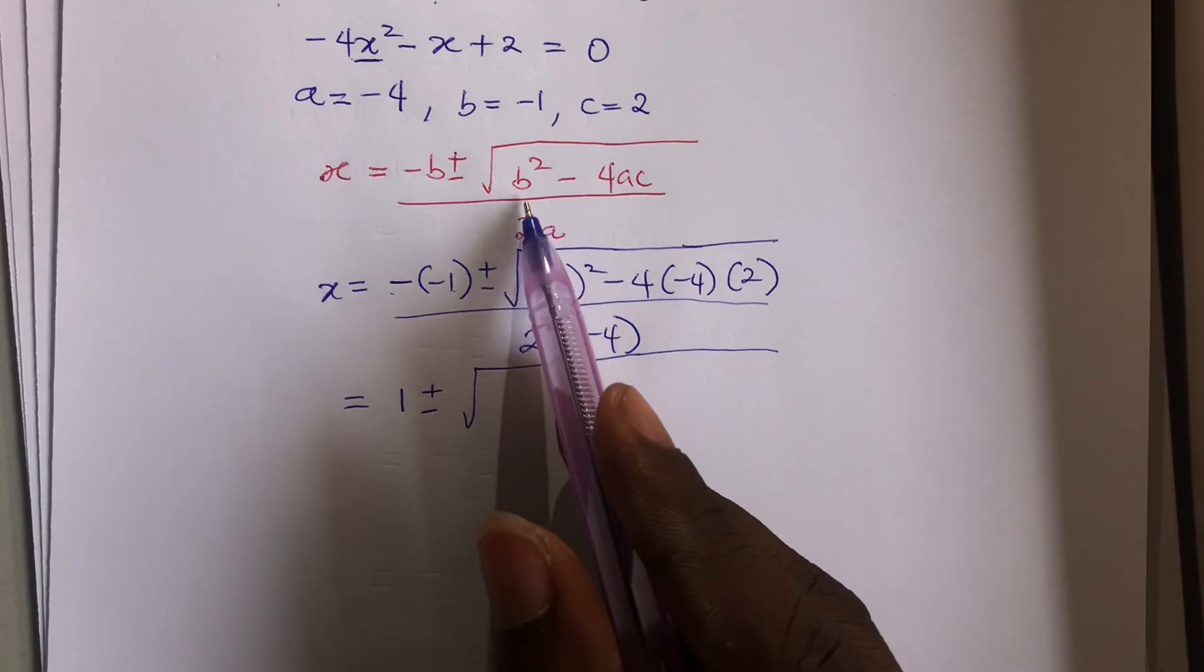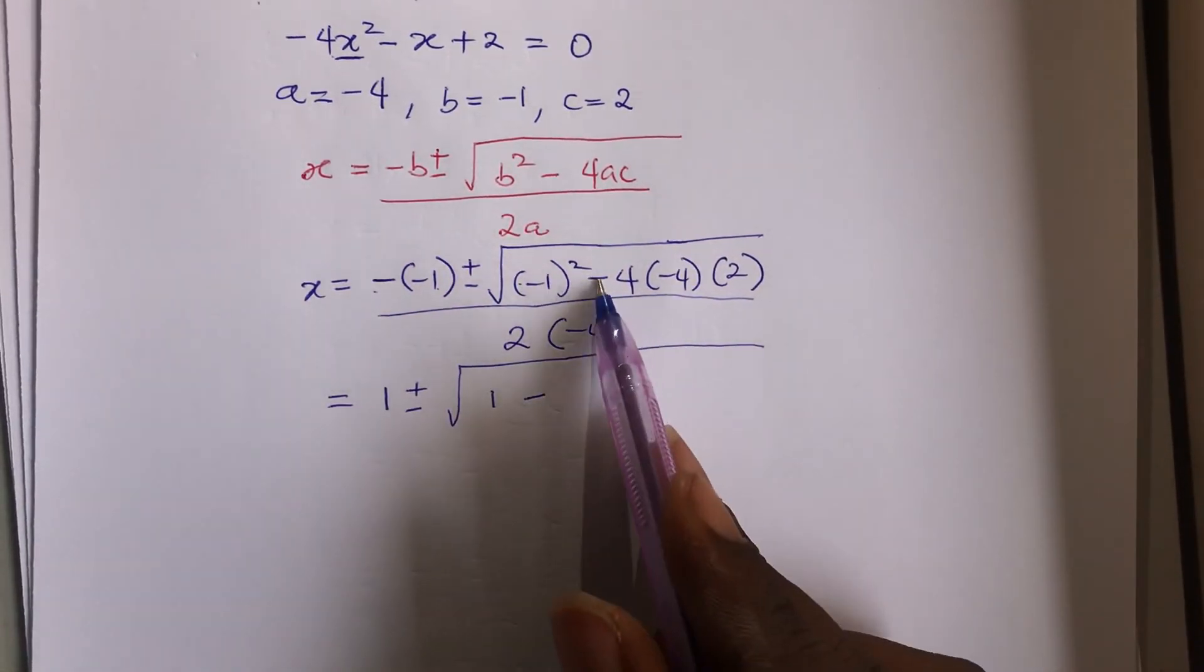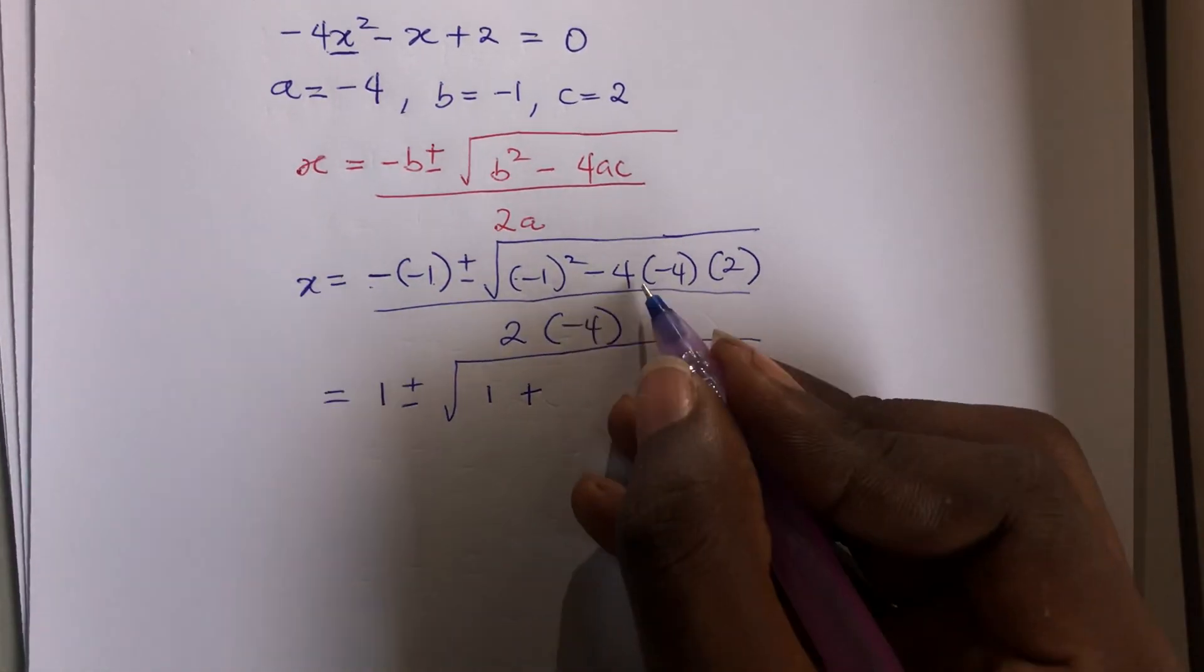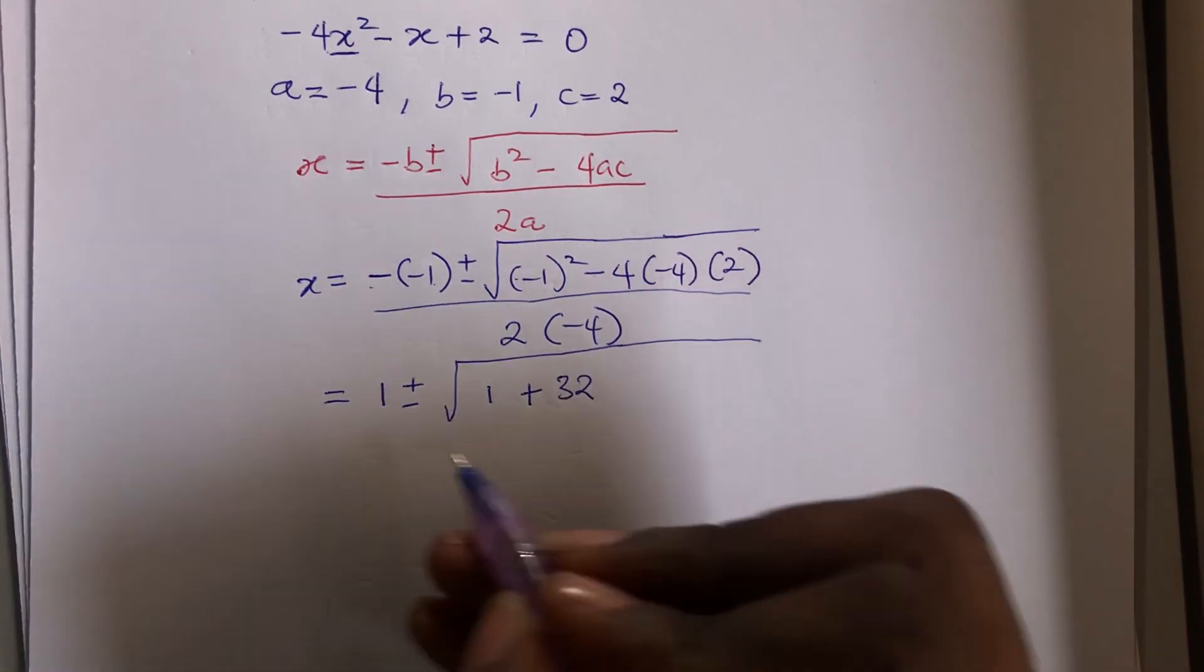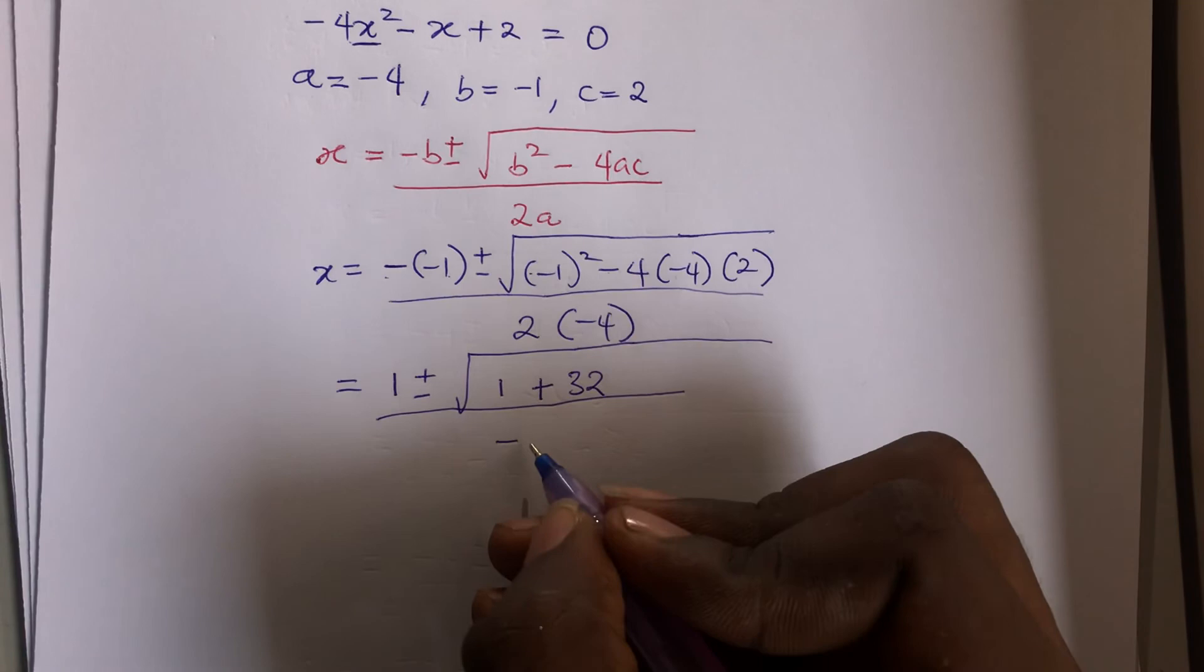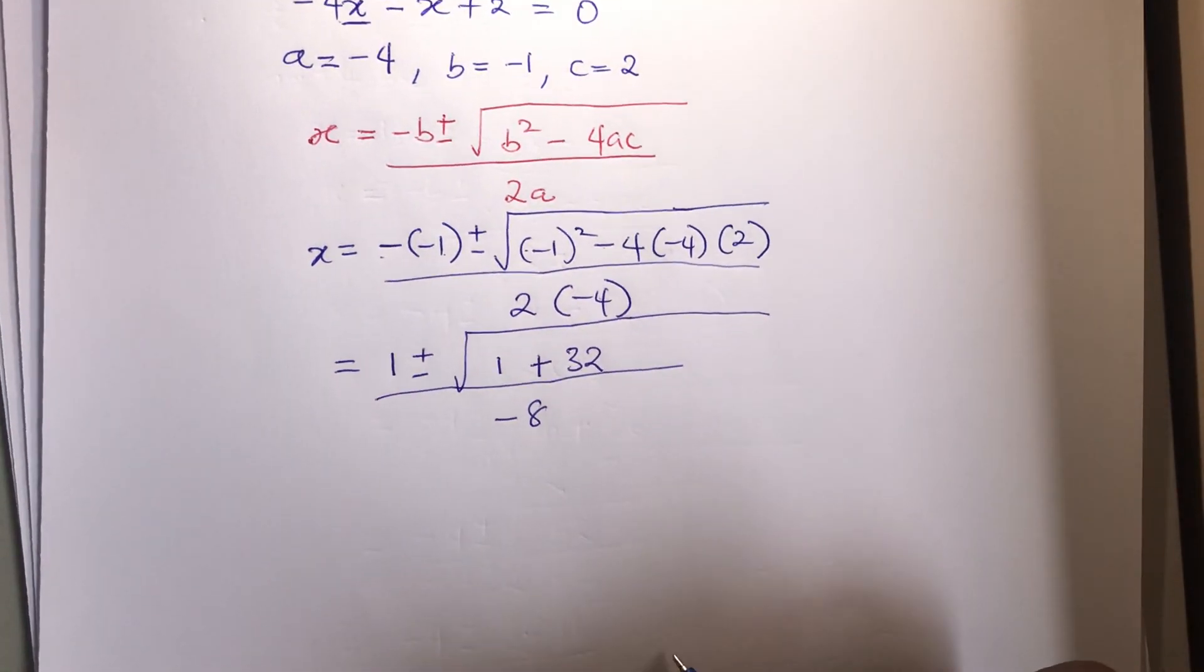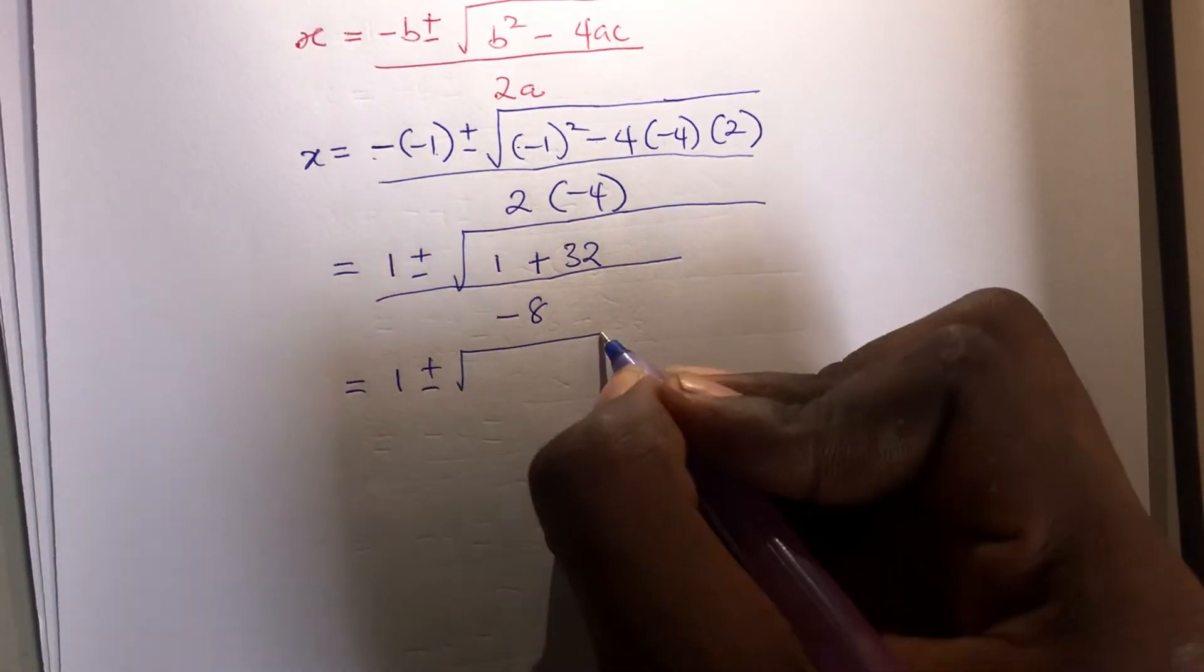The square of minus 1 is 1. Now remember minus times minus is going to give you plus. 4 times 4 is 16, 16 times 2 is 32. All over 2 times minus 4 is minus 8.